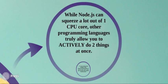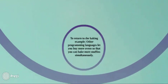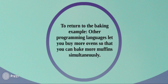While Node.js can squeeze a lot out of one CPU core, other programming languages actually allow you to do two things at once. So in terms of baking, these other programming languages would allow you to buy more ovens, so you can make even more great muffins.